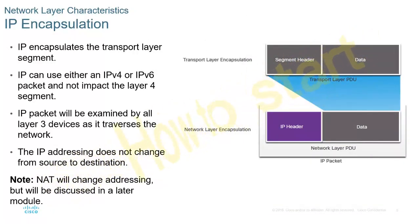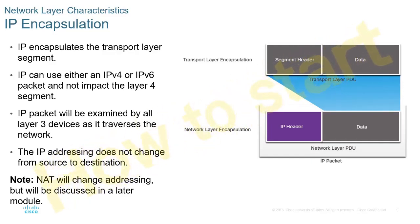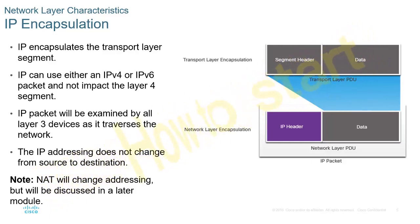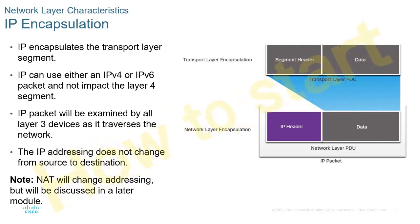Let's talk about encapsulation. A segment from layer 4, the transport layer, will become the data for our packets. Our packet will then put on our IP header. Keep in mind, if we're doing any type of address translation — NAT — the destination and source addressing may be slightly different, but the IP header is where source and destination address information will be going.